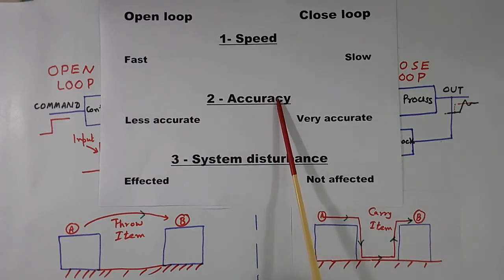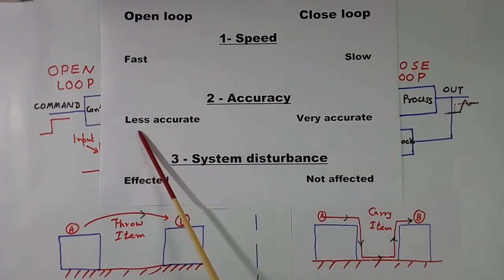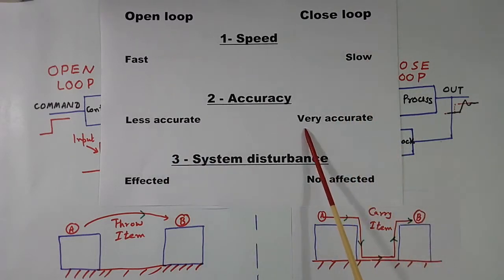Then accuracy. Anybody can tell by using this block, this is less accurate. Because when we throw the ball, ball can go here, here, here. But in this, it will be very accurate. This man will take the ball and hand over personally. This will not go here, here, here or here. So open loop system accuracy is less. In closed loop system, accuracy is more. They are very accurate.